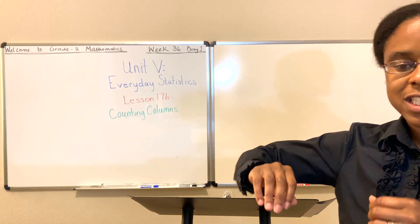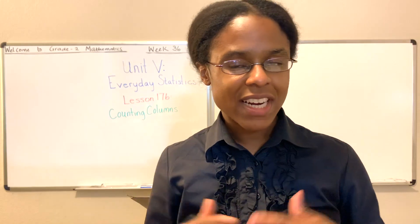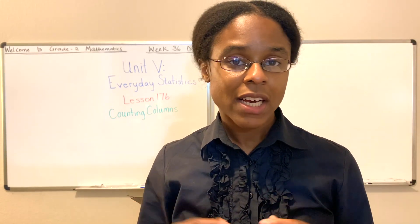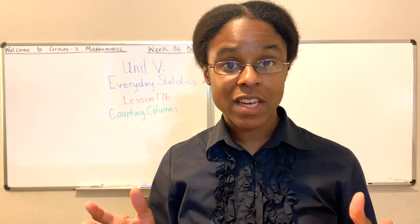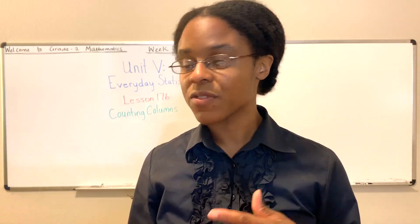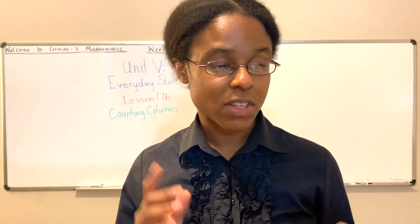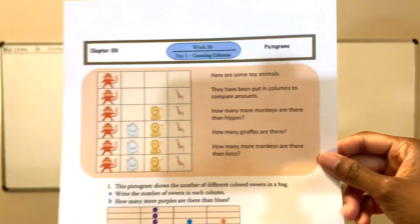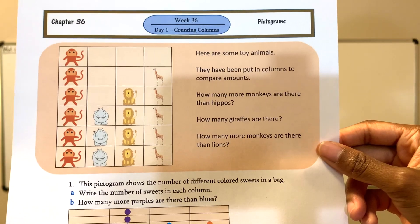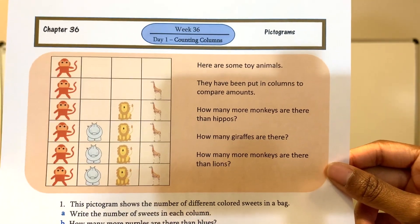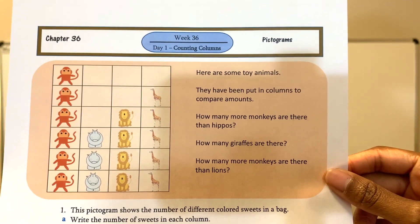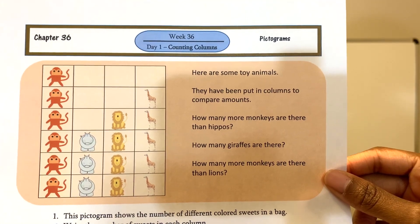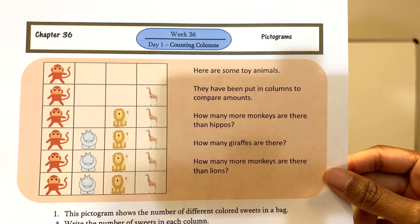When you're working through statistics, what you're just trying to do is find out statistics — start with an overall number and find out a percentage of that number that is doing something different than everything else. Here we have — if you have your workbook, you can just pull it out, but for those who don't, you can look at this. Here are some toys: you have a monkey, some hippos, a lion, a giraffe. They've been put in columns to compare amounts.